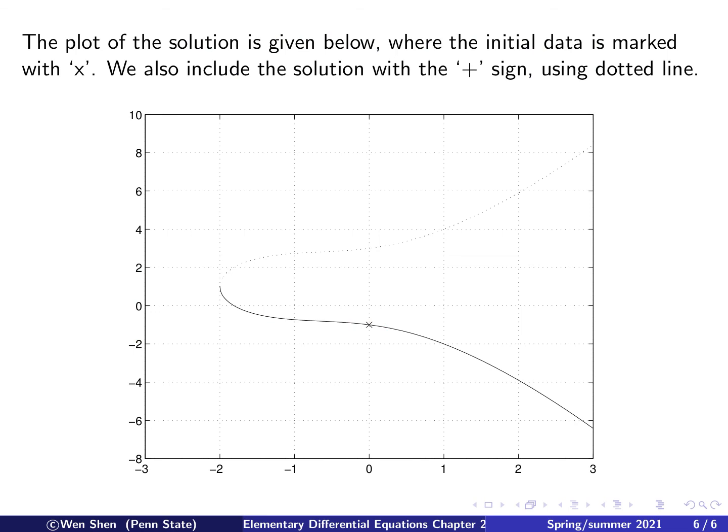Finally, let me show you the plot of the solution. It's shown in this graph here, and this curve, and it goes down to negative infinity. The initial data, y(0) equals negative 1, is marked with a cross sign.